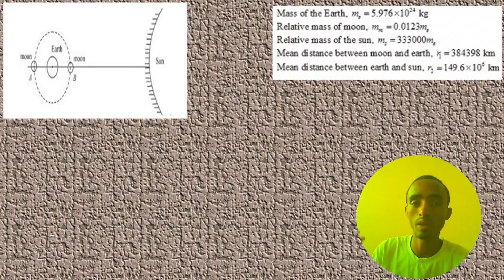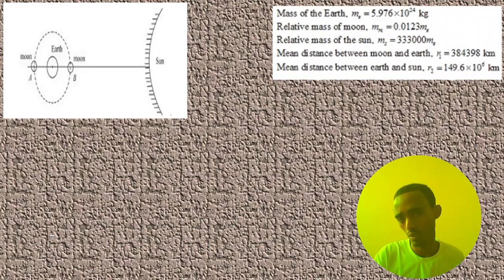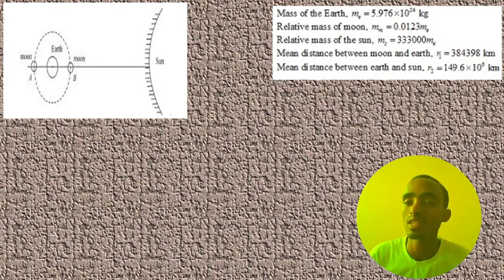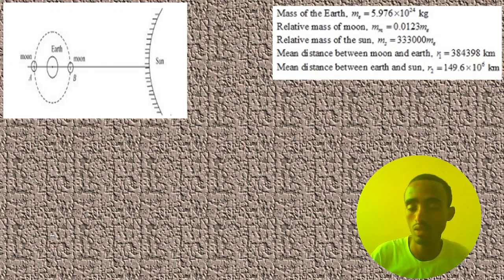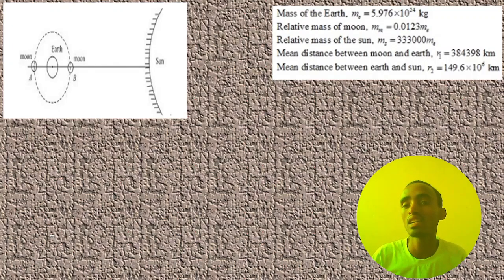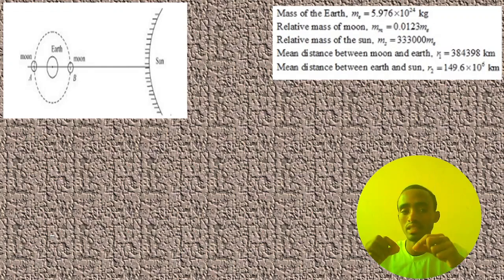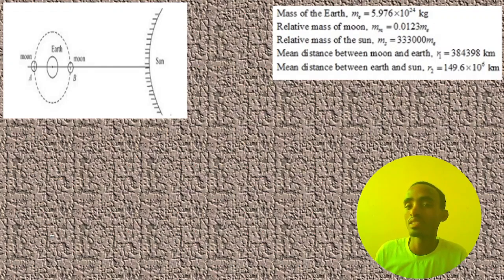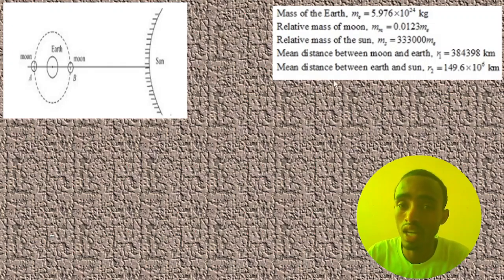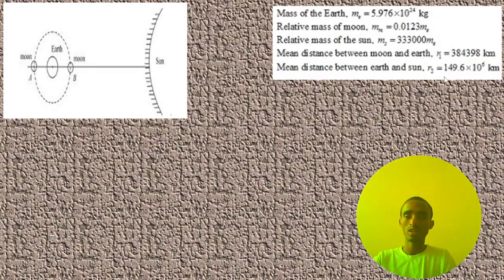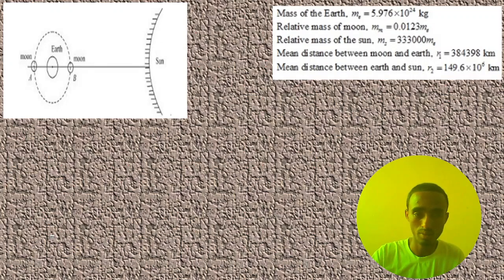We know the mass of the earth, which is equal to 5.976 × 10^24 kilograms. The relative mass of the moon is equal to 0.0123 times the mass of the earth, and the relative mass of the sun is equal to 333,000 times the mass of the earth. The mean distance between the moon and the earth is this value, and the distance between the earth and the sun is this value, or one astronomical unit.